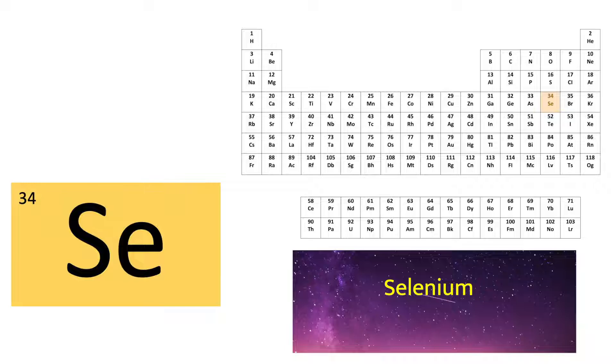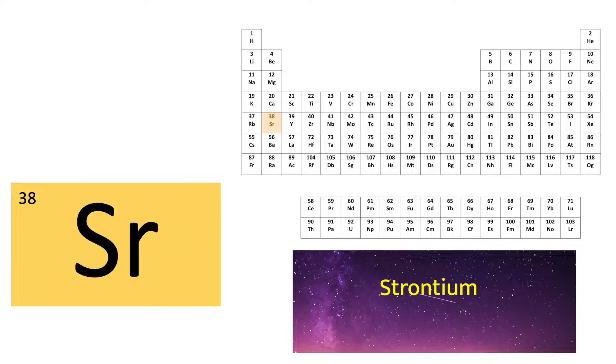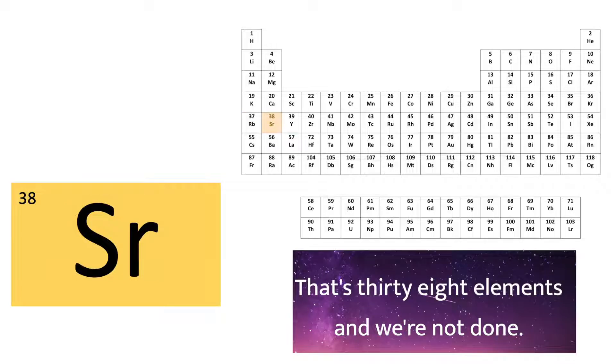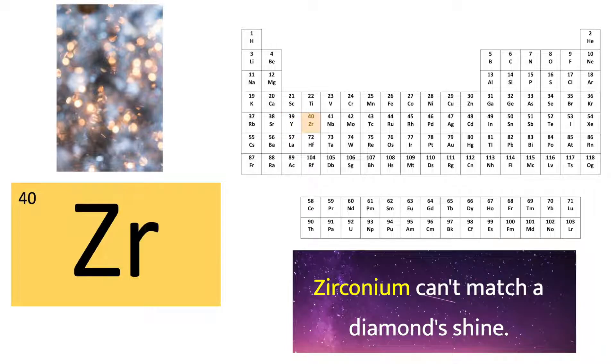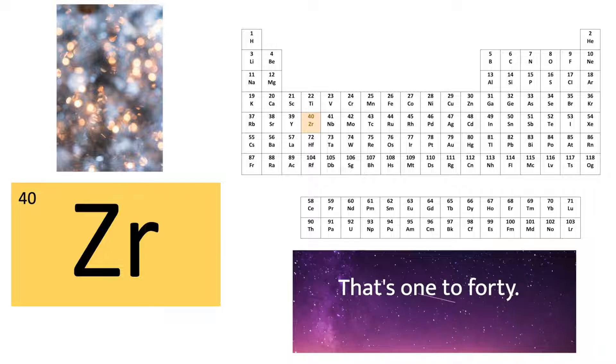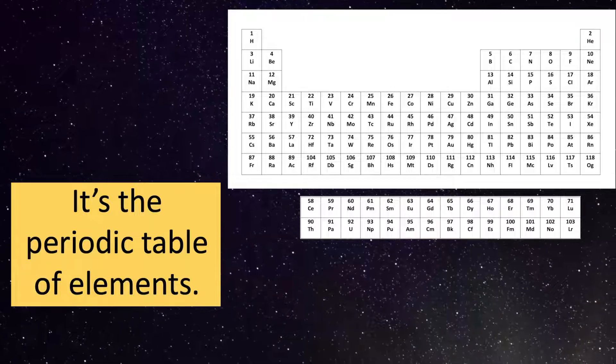Selenium, bromine and krypton. Superman doesn't like the sound of this one. Rubidium and strontium. That's 38 elements and we're not done. Yttrium is 39. Zirconia can't match a diamond shine. That's 1 to 40. Repeat the track until you've got it. Surely.